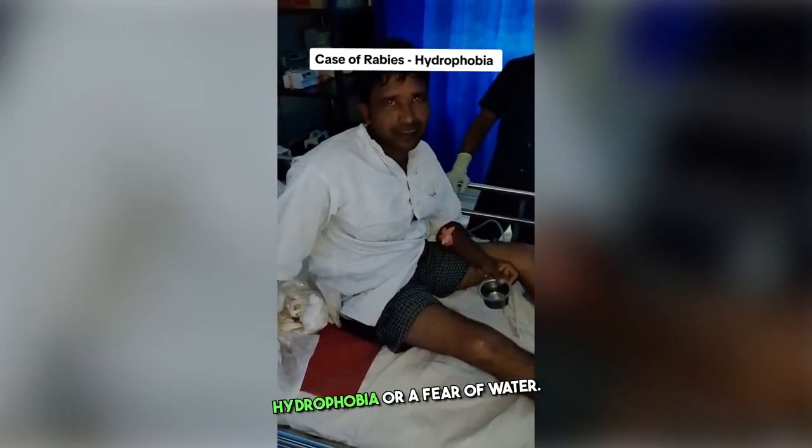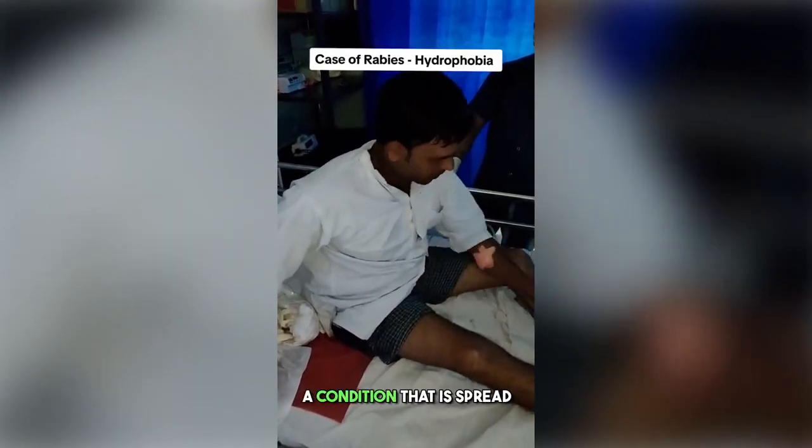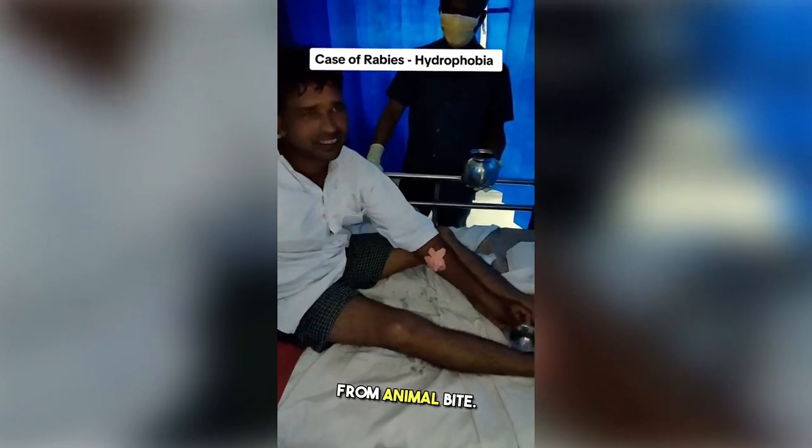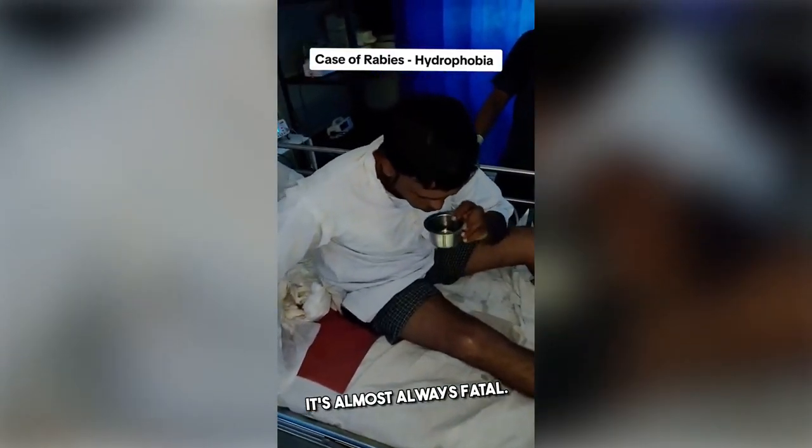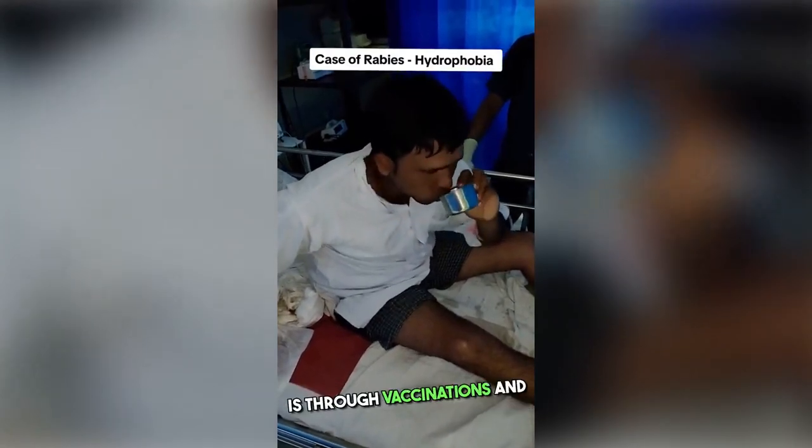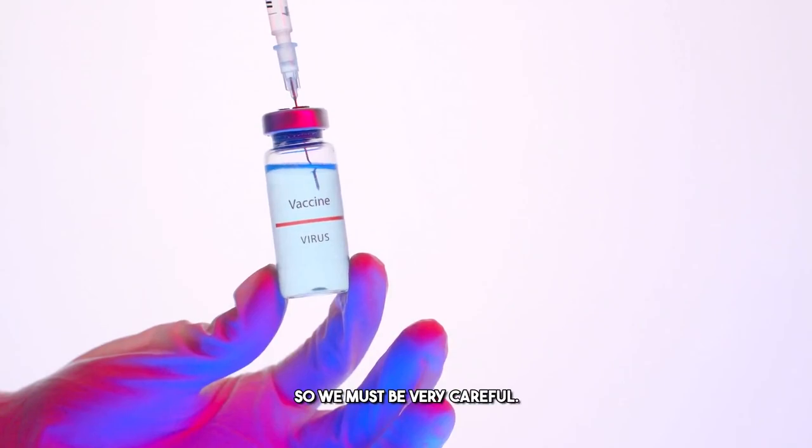This is a symptom called hydrophobia, or a fear of water. It is a late-stage symptom of rabies, a condition that is spread from animal bite. Once the symptoms occur, it's almost always fatal. The only way we can prevent this is through vaccinations and avoiding animal bites. There's no cure, so we must be very careful.